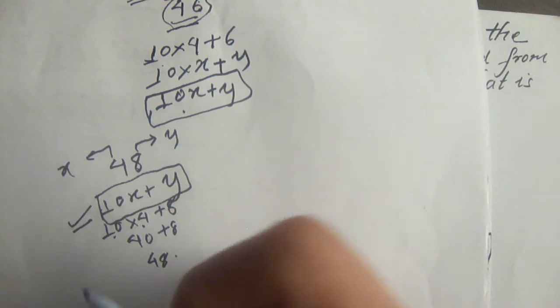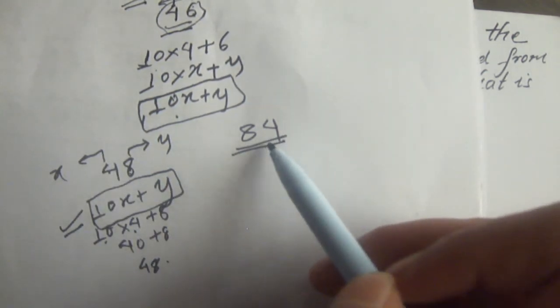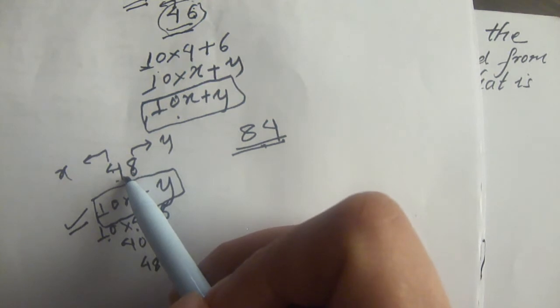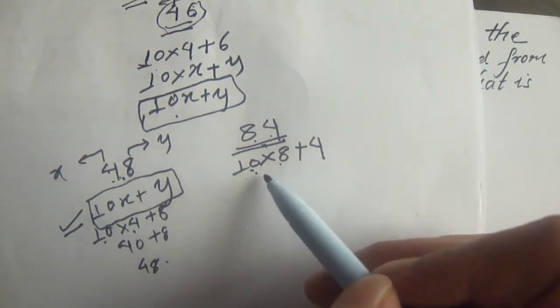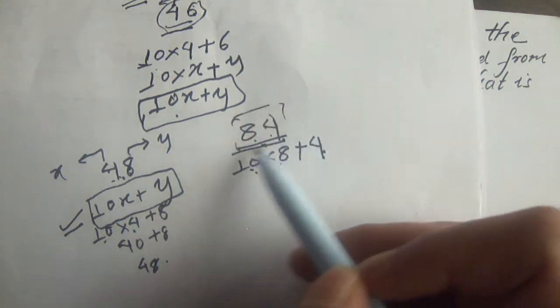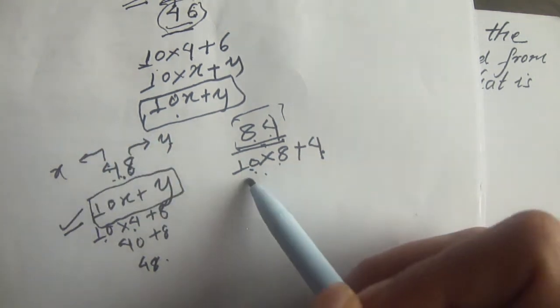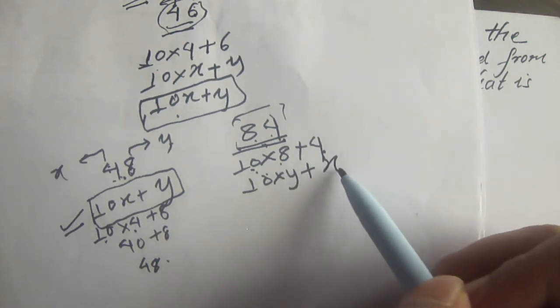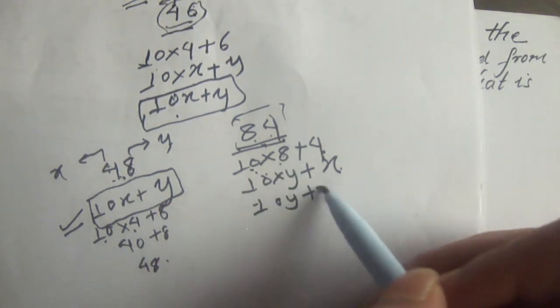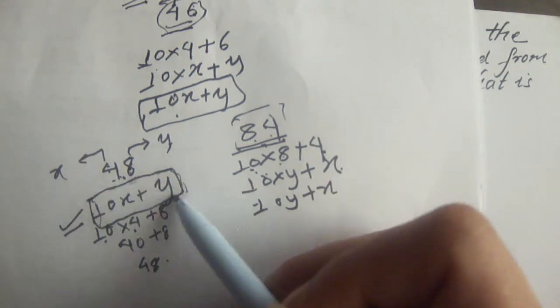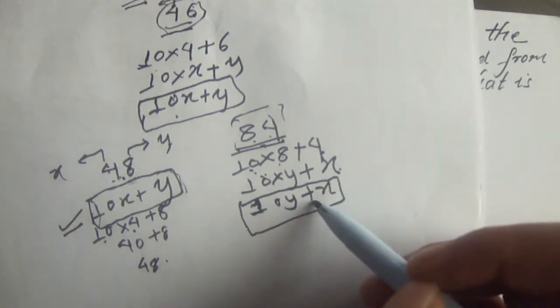Now, the reverse of 48 is 84. We put 8 in front and 4 in back to get the reversed digits. How do we write 84? We write it as 10 times 8 plus 4, which gives 80 plus 4 equals 84. In this case, y goes in front and x goes behind. So the expression for the reversed number is 10y plus x. The original number has the general expression 10x plus y, and the reversed number has the expression 10y plus x.